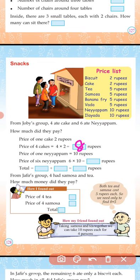Price of one naiappam is ten rupees. Price of six naiappam, yes, six tens are we know that, sixty rupees. So total: four cakes are twenty rupees, tea, four fives are again twenty. Total forty rupees.